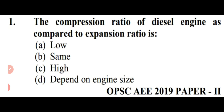Our first question is: the compression ratio of a diesel engine as compared to expansion ratio is. The right answer is option C, that is 'high'. The compression ratio of a diesel engine as compared to the expansion ratio is high.